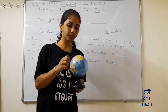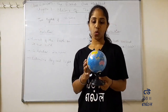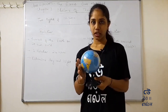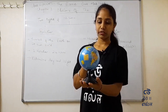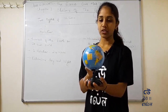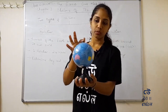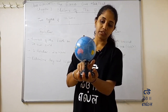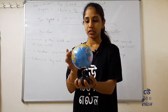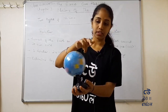Rotation is the movement of the Earth on its own axis. Look at this — here is a fixed Earth, this is the globe. The movement of the Earth on its own axis means: if we consider the axis, the Earth rotates around its own axis.